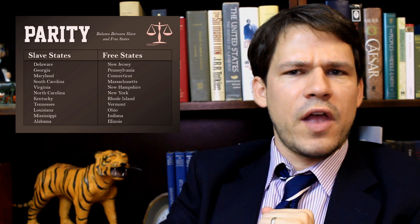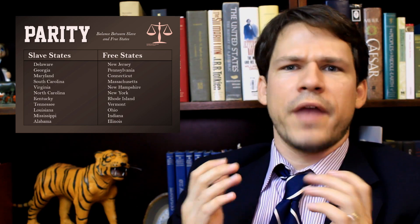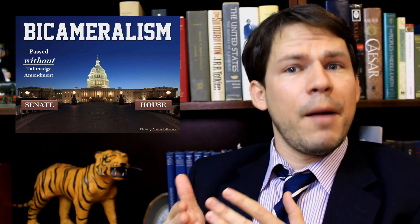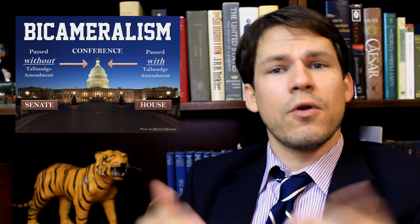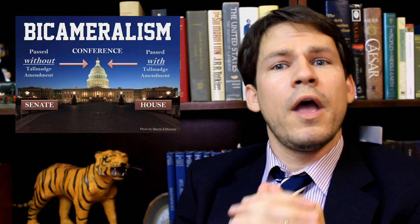With Alabama admitted, there was now an equal number of slave and free states. If Missouri came in as a slave state, there would be more slave states than free states. Looking at bicameralism: the Senate, with an equal number of senators from slave and free states, passed the Missouri bill without the Talmadge Amendment. But the House, apportioned by population — and free states were more populous — passed it with the Talmadge Amendment. This necessitated a conference to produce one bill passable by both houses.